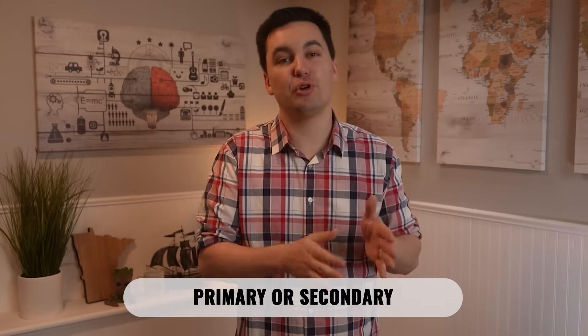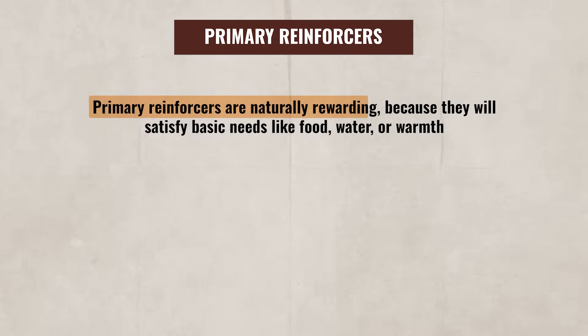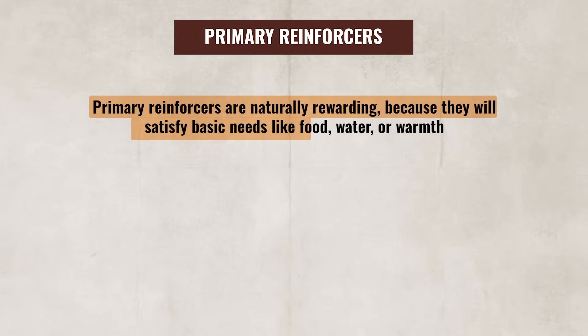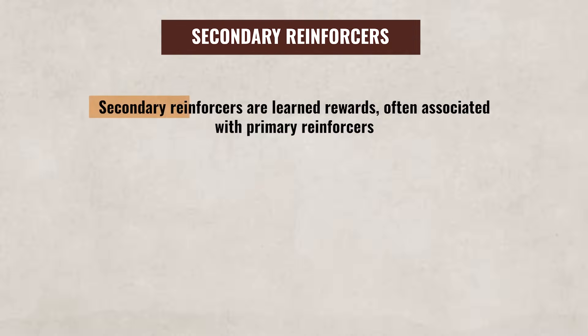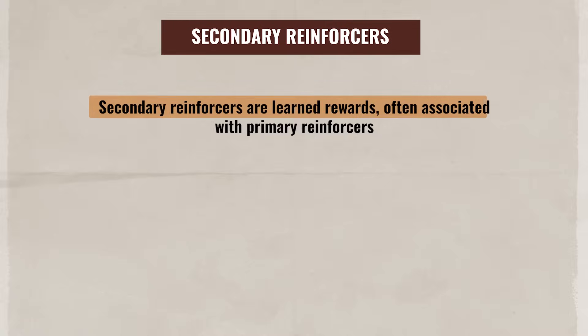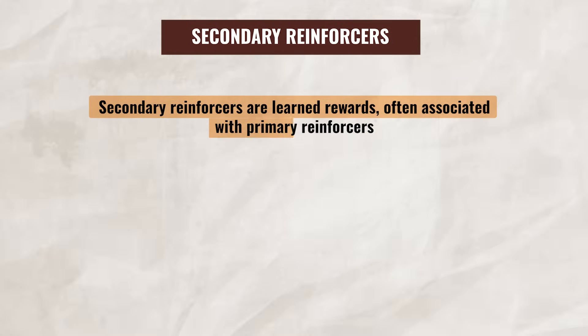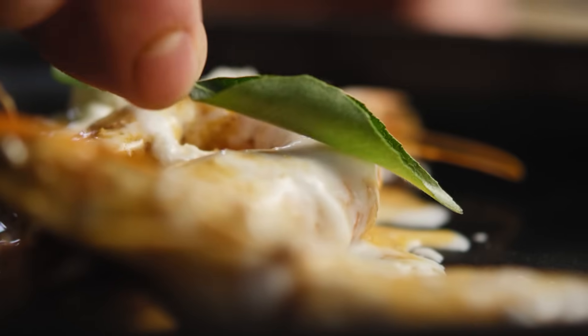Generally, reinforcers are either primary or secondary. Primary reinforcers are naturally rewarding because they satisfy basic needs like food, water, or warmth. Secondary reinforcers, on the other hand, are learned rewards, often associated with primary reinforcers, such as money, which can be used to purchase different items such as food.